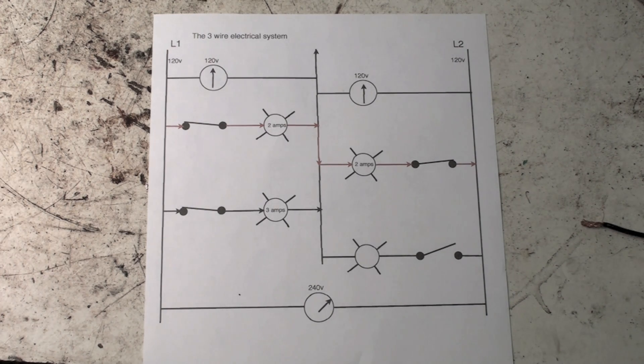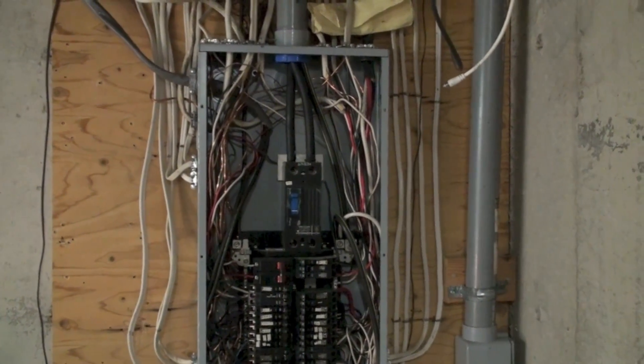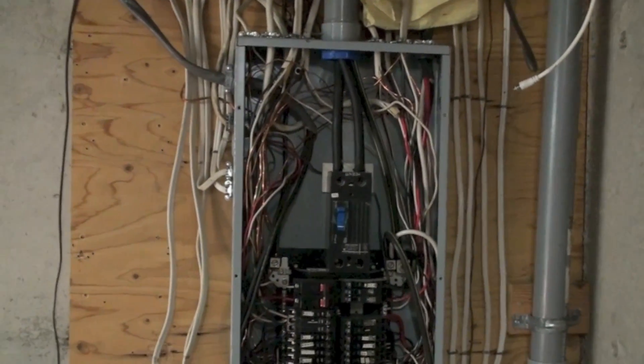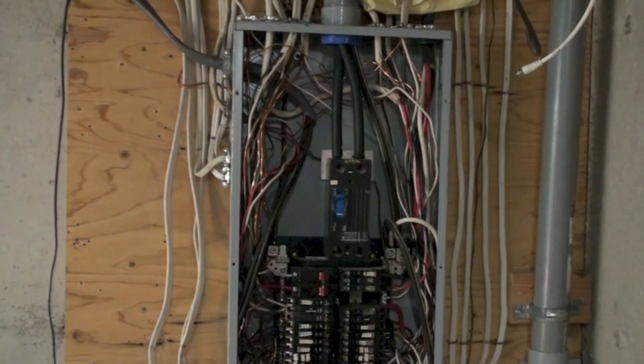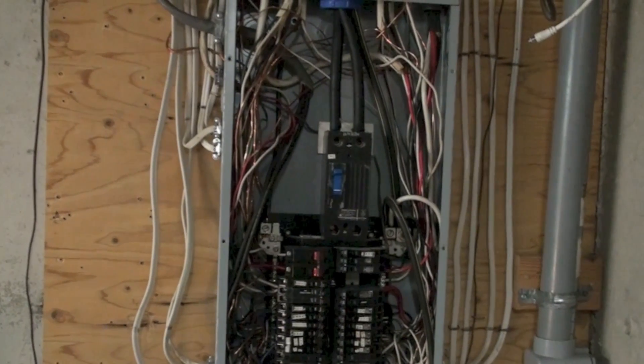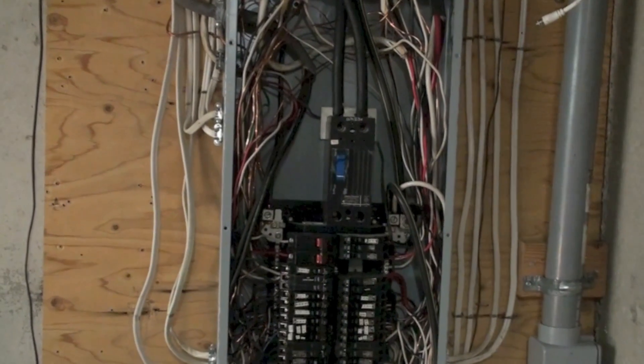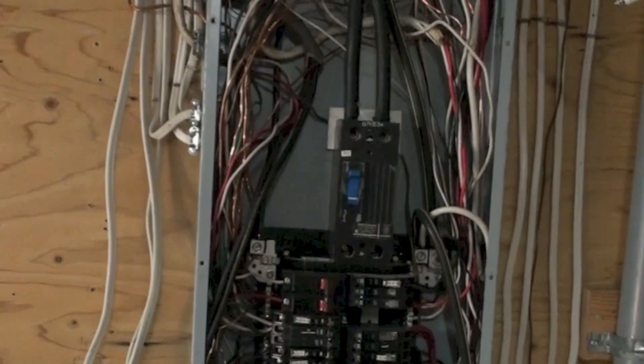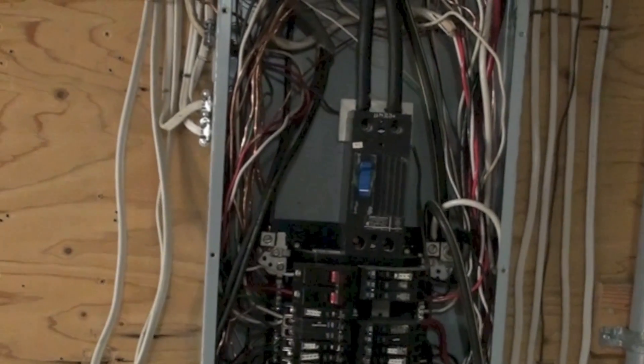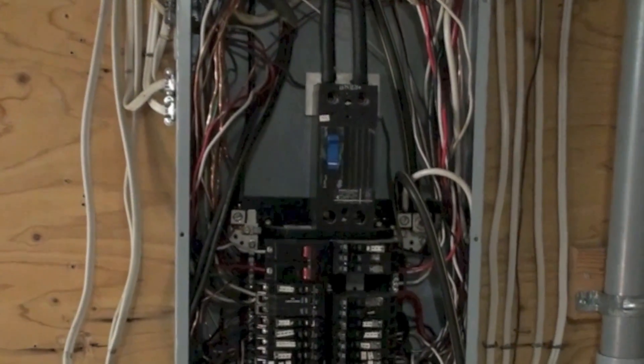I'm going to show you what this looks like in a panel. It's a little harder to tell what's going on there, but I'll try to point it out. Here we're showing a panel, and you can see the main breaker right there in the center and the two big black wires going to it—that's my L1 and my L2. To the right of that, you'll see the neutral wire. The neutral wire is going down to the terminals right there, just below the breaker. That is the neutral side. Those are the only three wires that are coming into this panel.